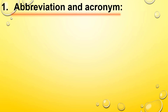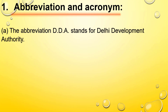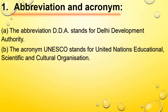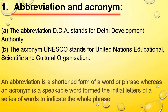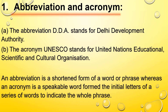Number 1: Abbreviation and Acronym. The abbreviation DDA stands for a shortened form of a word or phrase, whereas an acronym — such as UNESCO, which stands for United Nations Educational, Scientific and Cultural Organizations — is a speakable word formed from the initial letters of a series of words to indicate the whole phrase.